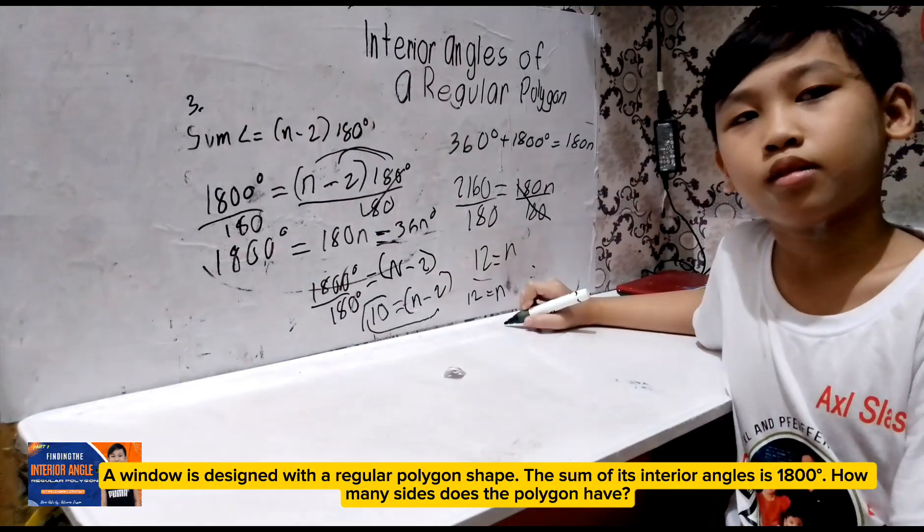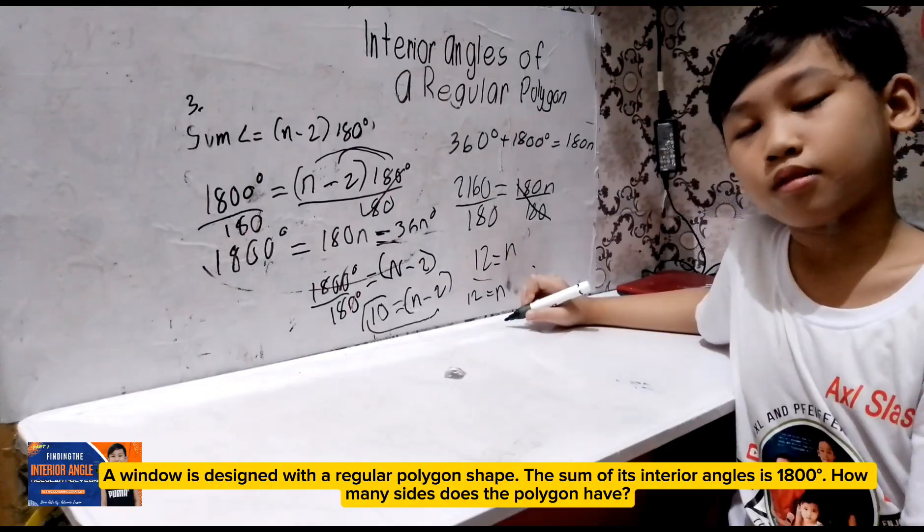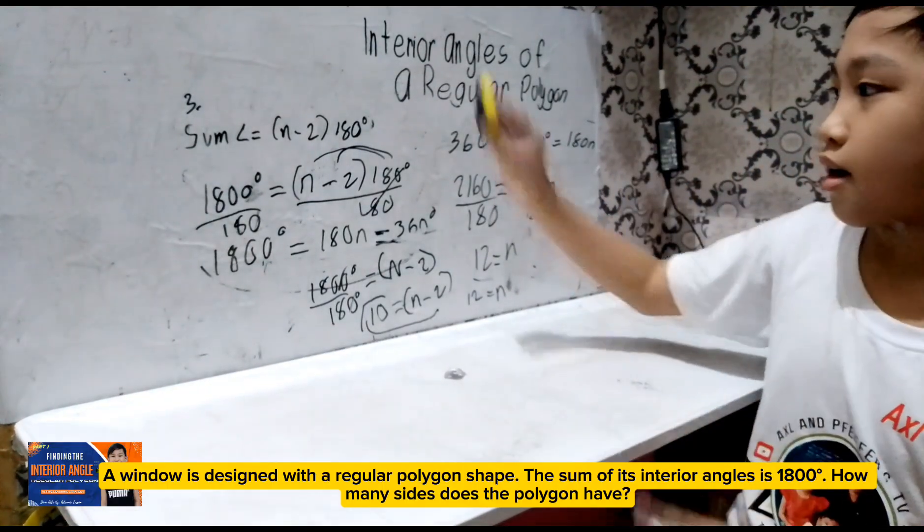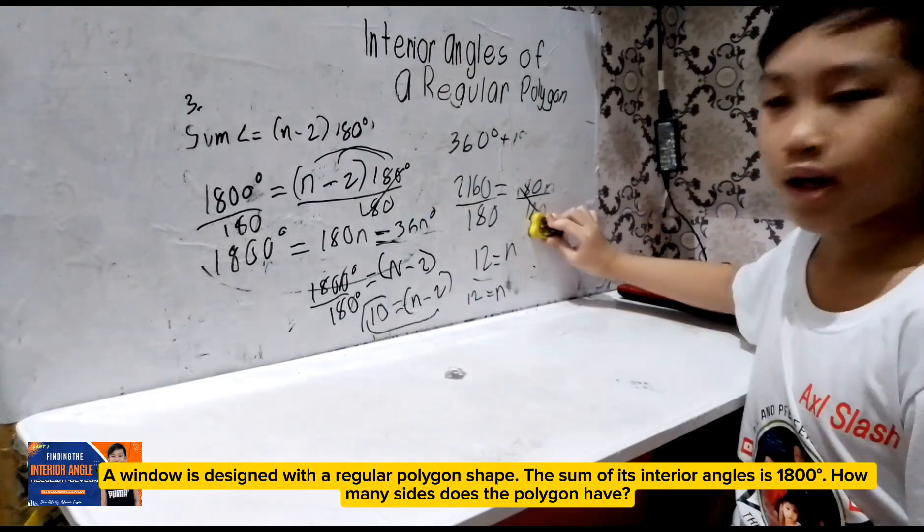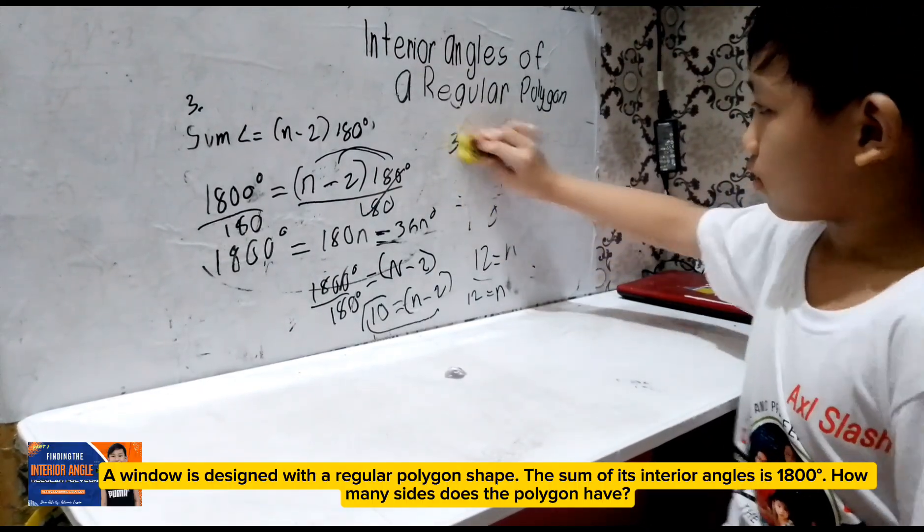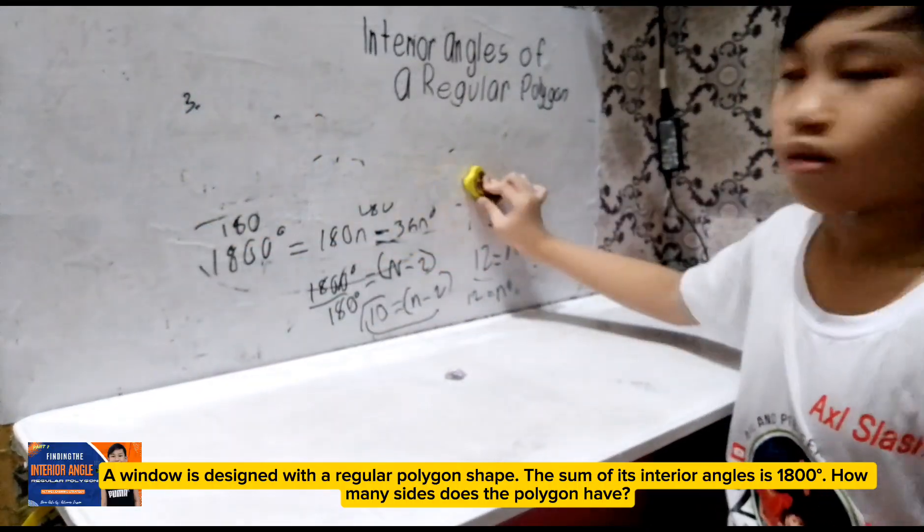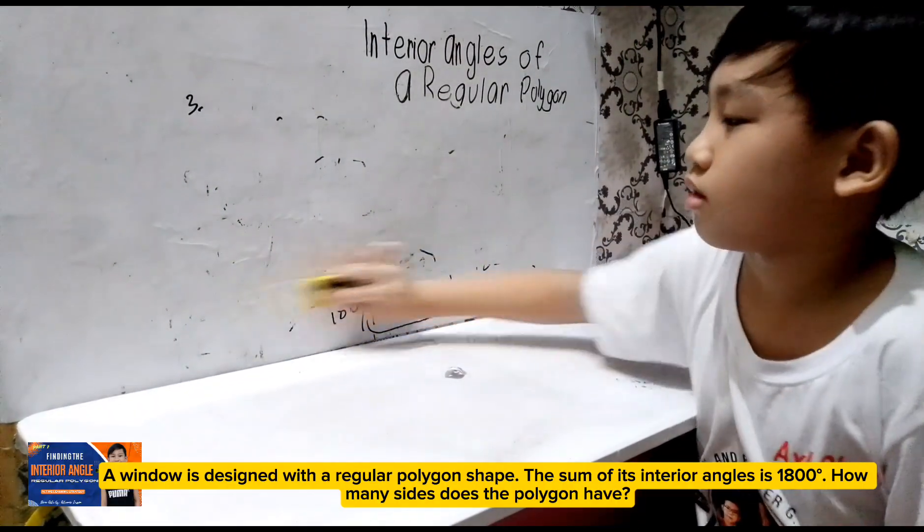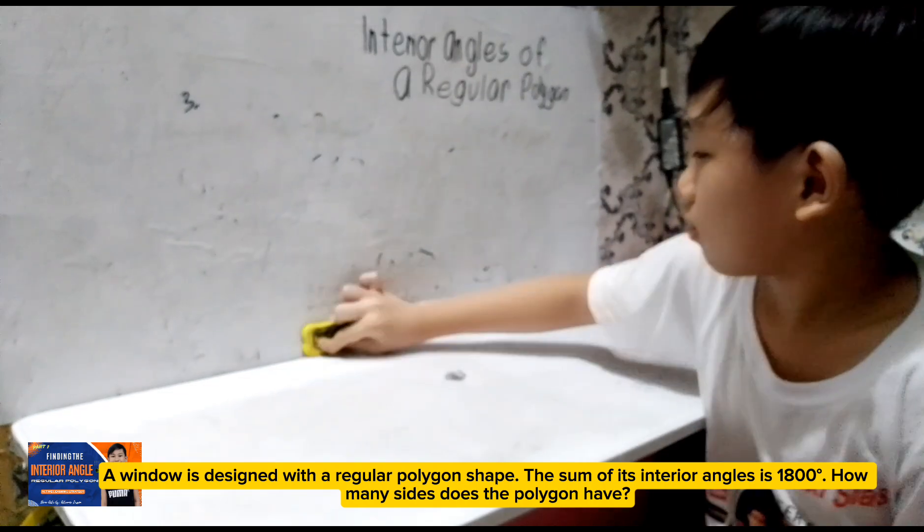10 plus N. Oh. So, your side, the polygon has side of 12. So, much better yung cancellation kaysa sa distribution. Kasi, mahaba-haba. Oo, mahaba. Mas malaking number. So, either of the solutions is correct. Doon ka na lang mag-focus sa mas madali. Okay? Pero maganda naman yung ginawa mong process.